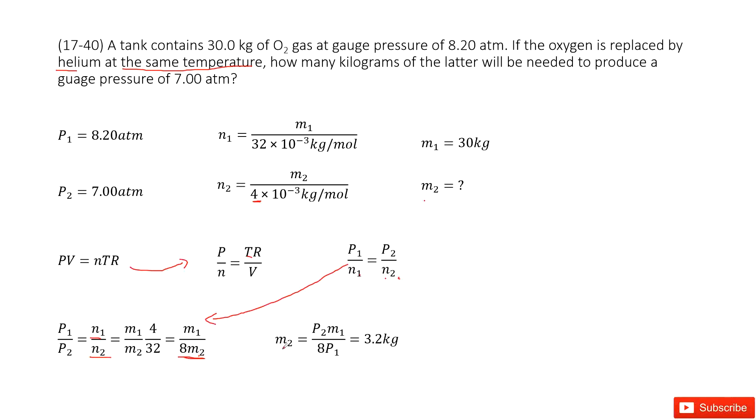Now we can solve for M2. P1 times 8M2 equals M1 times P2, so M2 equals P2 times M1 divided by 8P1. Input the known quantities to get the answer. Thank you.